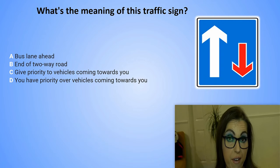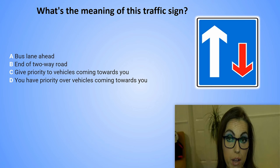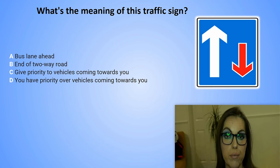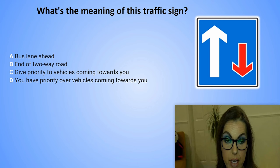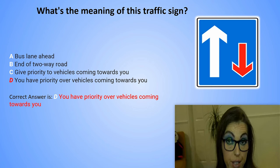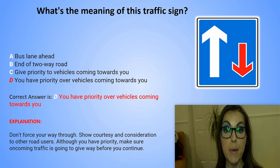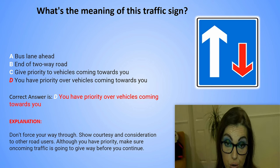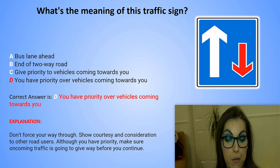What's the meaning of this traffic sign? A. Bus lane ahead. B. End of two-way road. C. Give priority to vehicles coming towards you. D. You have priority over vehicles coming towards you. The correct answer is D. You have priority over vehicles coming towards you. Explanation: Don't force your way through. Show courtesy and consideration to other road users, although you have priority. Make sure oncoming traffic is going to give way before you continue.